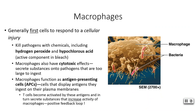Your macrophages are usually the first cells to respond to cellular injury or tissue damage. These kill pathogens by using chemicals like hydrogen peroxide — which you've probably heard of — and hypochlorous acid, which is the active component in bleach. We know that bleach is used to sanitize things, so it's pretty good at killing pathogens.